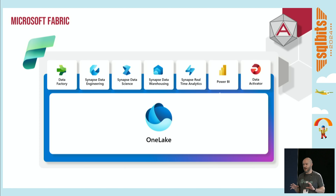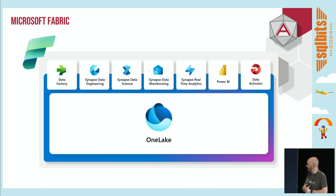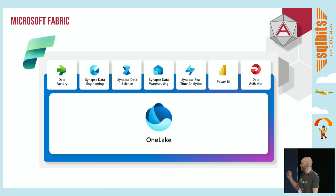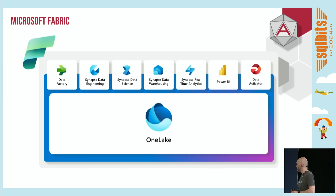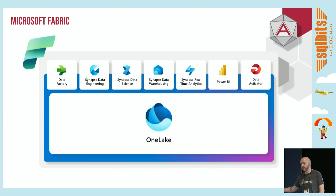Expanding on those elements - Data Factory, Synapse, and Power BI - we get the workloads within Fabric. We've got our Data Factory workload for orchestration, data engineering which gives us notebooks and Spark, data science for running machine learning models, the data warehousing element giving us a SQL experience working in T-SQL, real-time analytics to process streaming data and work with Kusto, the Power BI element, and a new one called Data Activator to action things on data coming through. That's what it's broken down into - those seven workloads essentially.